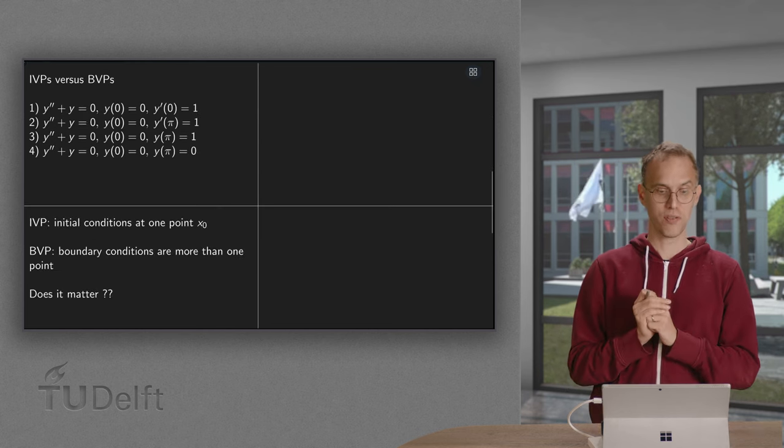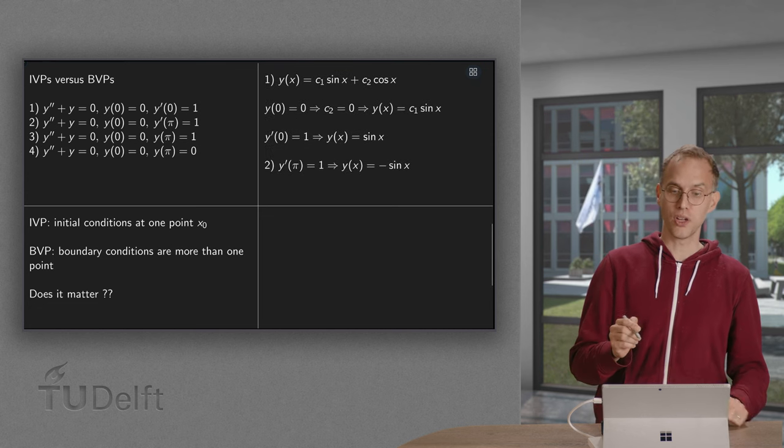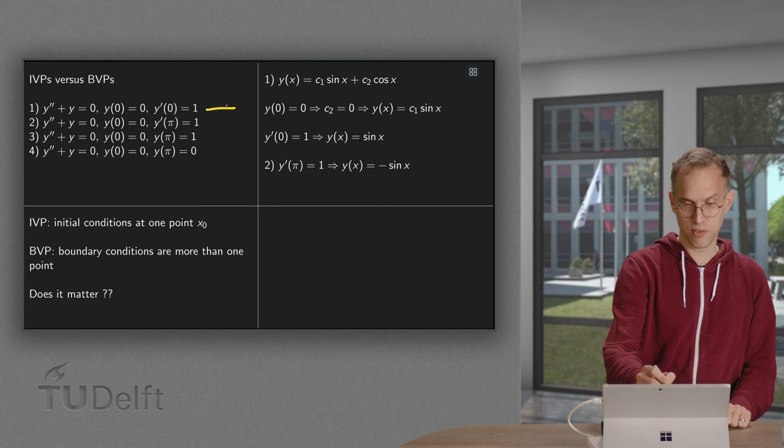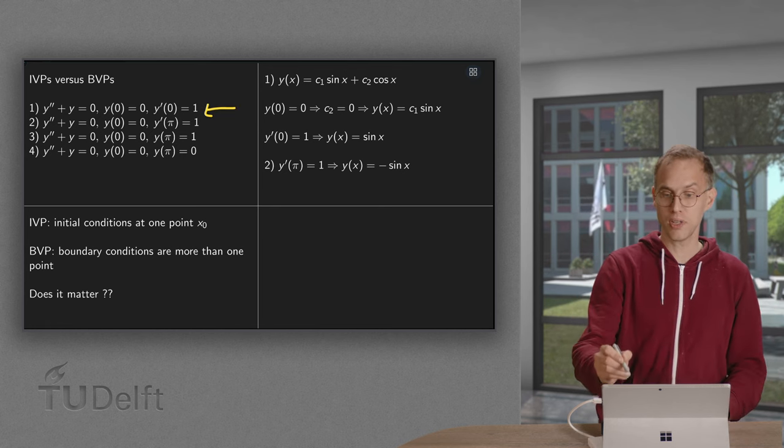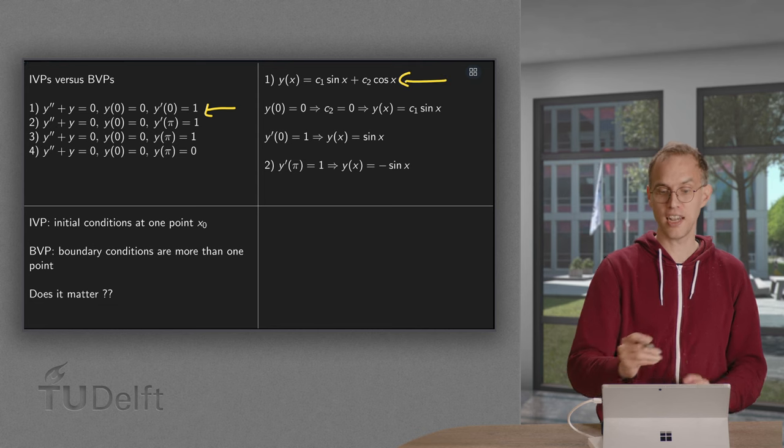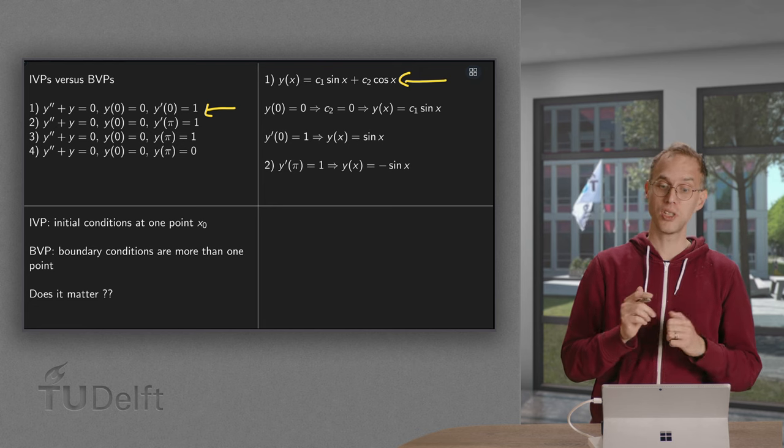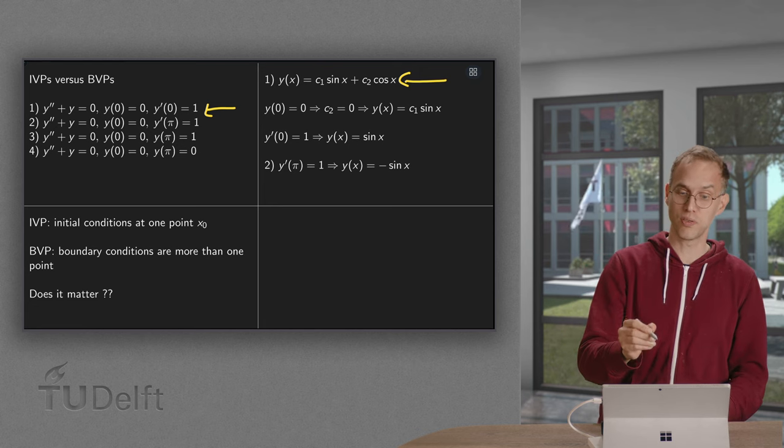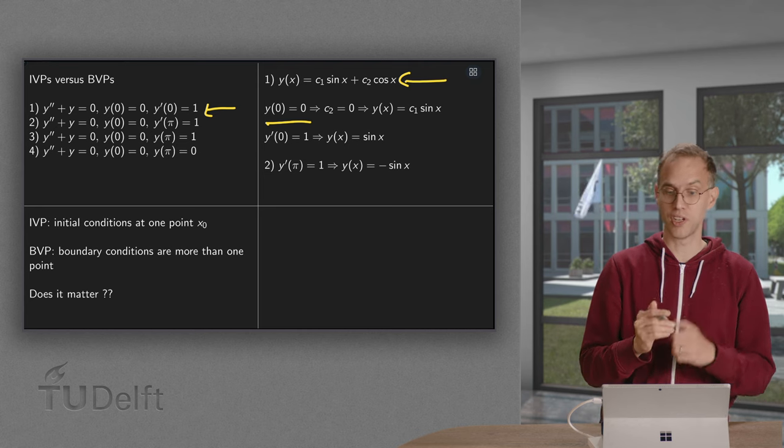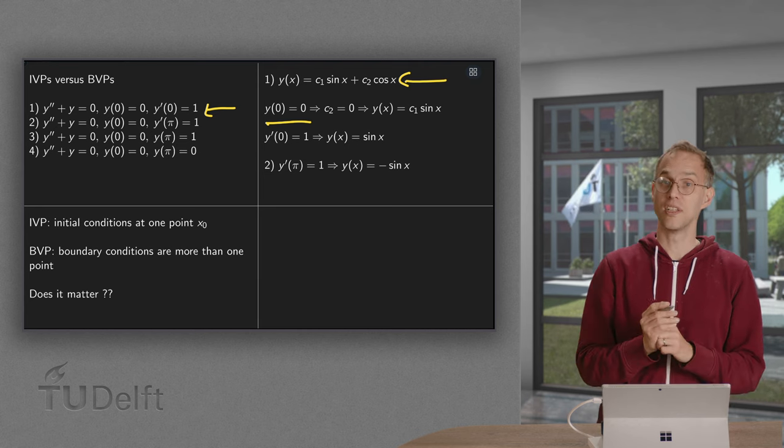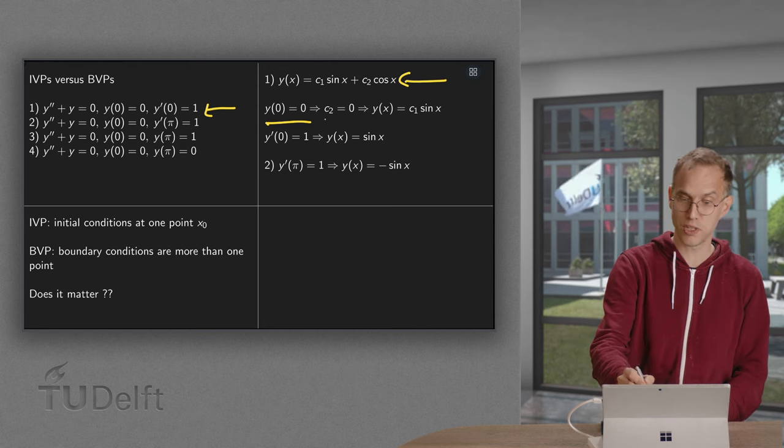Starting with the first one. So we can write down the general solution. You get the linear combination of sine x and cosine x. Then we use the boundary conditions. In this case both at x equals zero. If we plug in x equals zero, we get y of zero equals zero. So we get c1 times zero plus c2 times one. So c2 has to be zero.